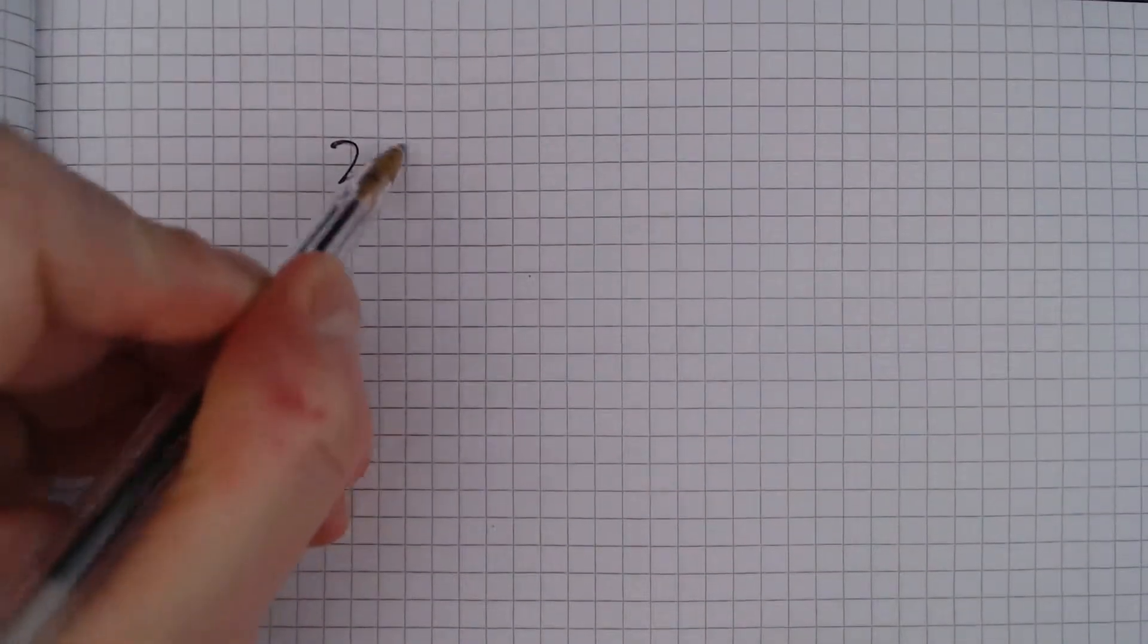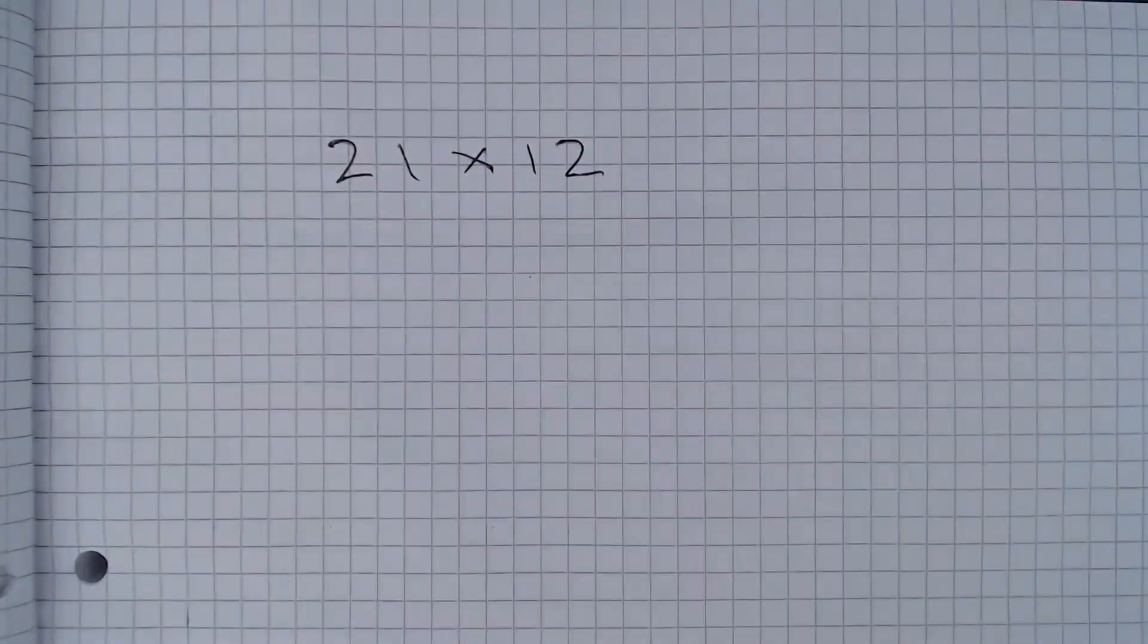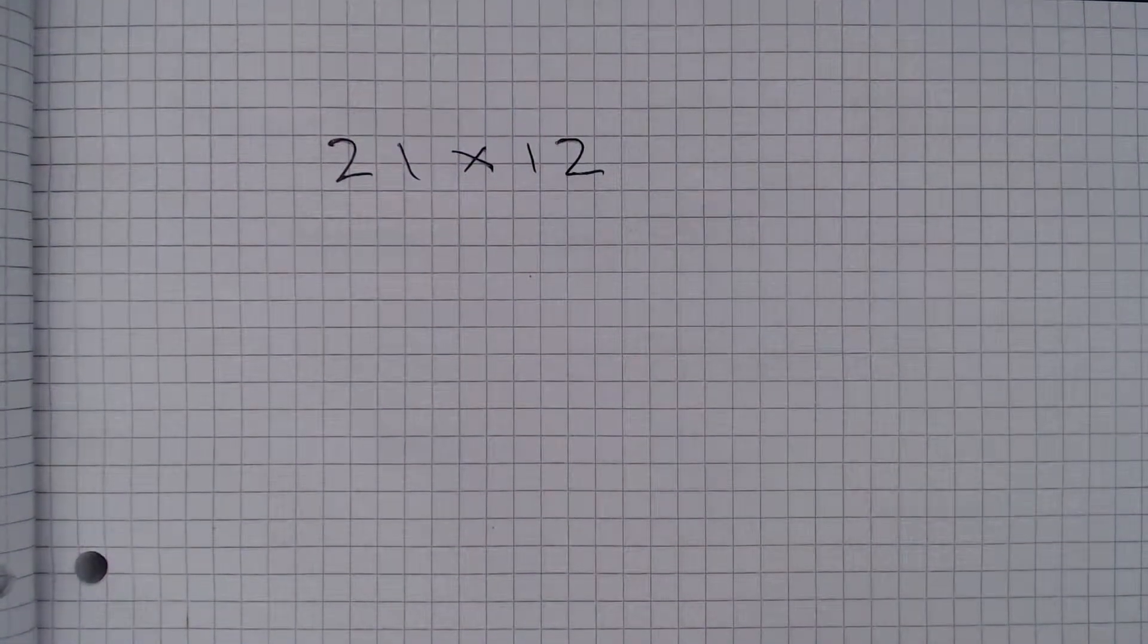So in this question, all we need to calculate is 21 multiplied by 12 and that will give us the total cost of the pencils in pence.